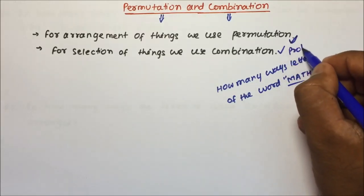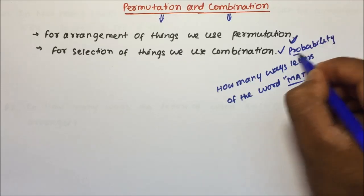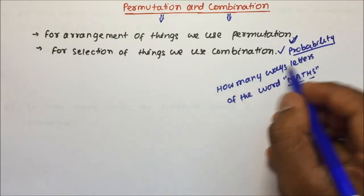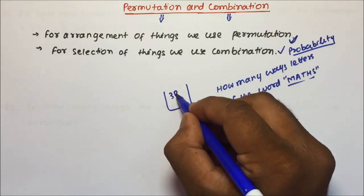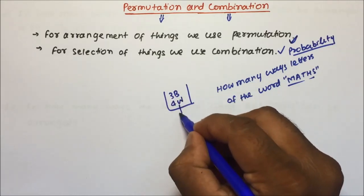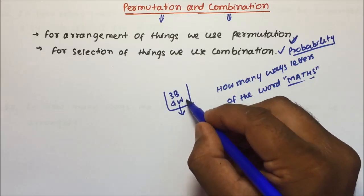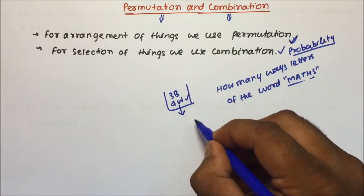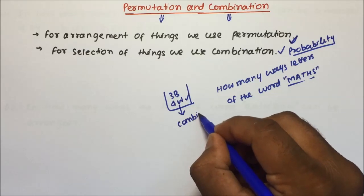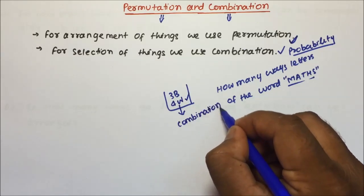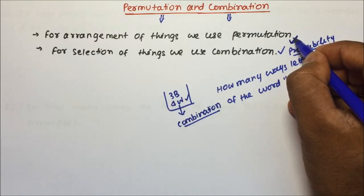In probability, we have used much of combinations. You would have seen the selection in probability — like there is a bag with three blue balls and four white balls. If you are selecting one ball out of it, what is the probability that it will be a white ball? So wherever selection is involved, that will be combination, and wherever arrangement is involved, that will always be permutation.